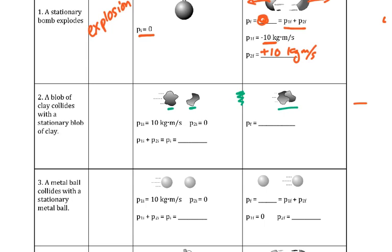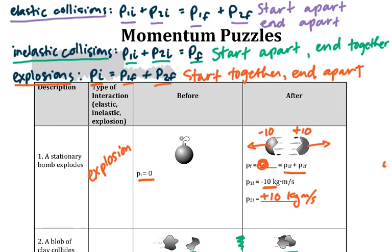So if we go back and look at our equations, the one where we had separate at the beginning and together at the end is the inelastic.